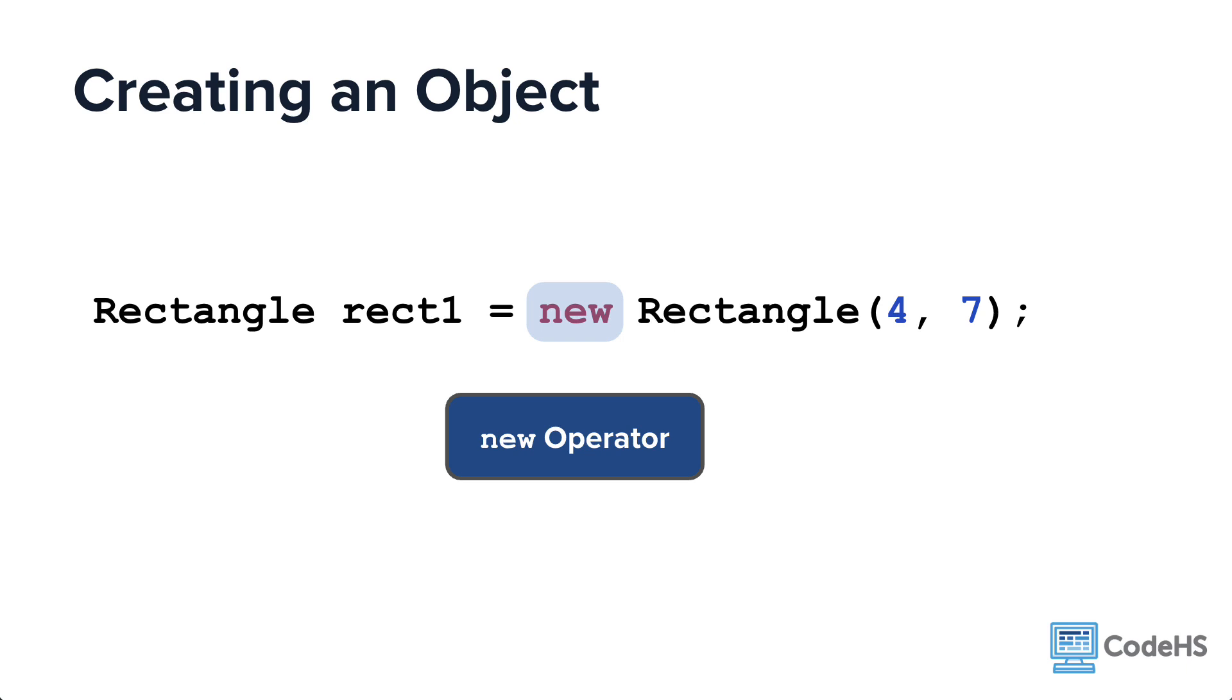Unlike primitive values, in order to create an object, you must use the new operator to instantiate a new class object.